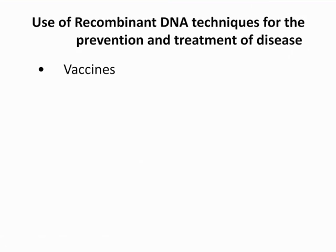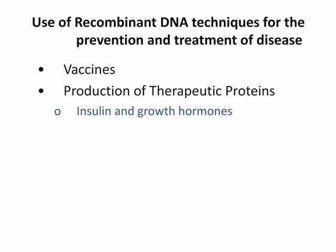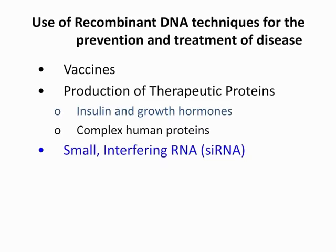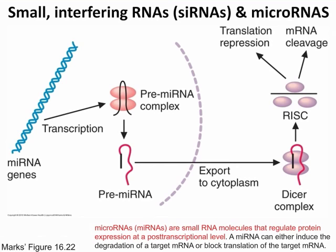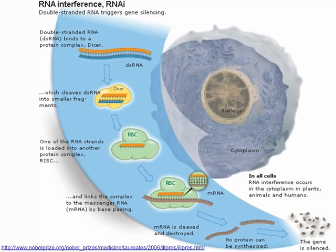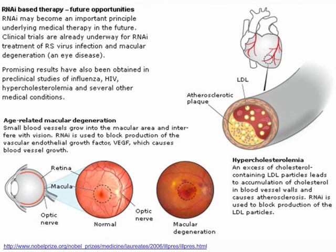Recombinant DNA can be used to prevent and treat diseases — in vaccines, for production of therapeutic proteins like insulin and human growth hormone, and for small interfering RNAs. siRNAs and microRNAs regulate protein expression at the post-transcriptional level. miRNAs induce degradation of mRNA or can block translation — that is the key takeaway. Watch the video on RNAi, siRNA, and miRNA under Chapter 17 video links if you need more detail.